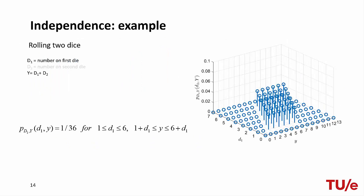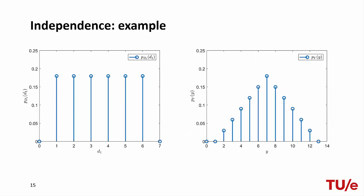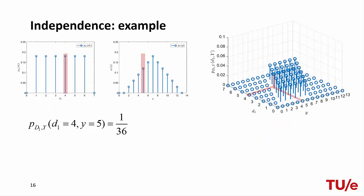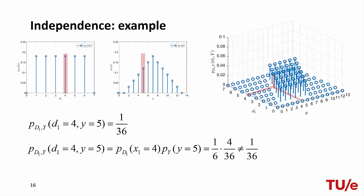In a second example, we look at d1 and the sum of d1 plus d2, which we call y. We obtain a similar PMF but with a different range. Intuitively, we can guess that these two random variables are not independent. To prove this, we marginalize over d1 and y to obtain the two marginals. Suppose we want to calculate the probability of d1 equal to 4 and y equal to 5. Through the joint PMF this probability is 1 over 36, but multiplying the two marginals gives a different value, confirming that d1 and y are not independent.